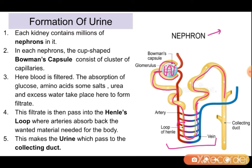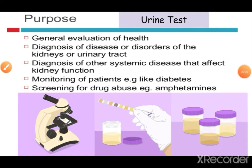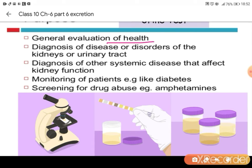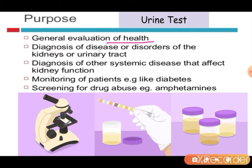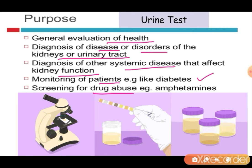This urine is collected by the collecting duct, which passes it on to the ureter, and then the ureter takes it to the bladder. Now, why do we go for a urine test? The urine test gives a general evaluation of our health. It diagnoses many diseases or disorders, whether the kidneys or urinary tract are functioning properly. It also monitors the sugar level — if there is more sugar in the urine, the person is suffering from diabetes. It also screens for drug abuse.